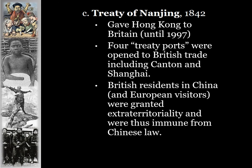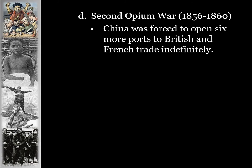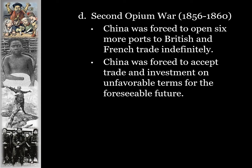British residents and other European visitors in China were also granted extraterritoriality with this treaty, making them immune from Chinese law — any European could do whatever they wanted, even against Chinese law, and could not be prosecuted. This treaty was very unfair to China, but since they lost the war, the British called the shots. This diplomatic immunity given to any European trader in China was very unfair. These are called the 'unequal treaties' — China was forced to open more ports to British and French trade and to accept trade and investment on unfavorable terms, causing China to lose its sovereignty during the age of new imperialism.